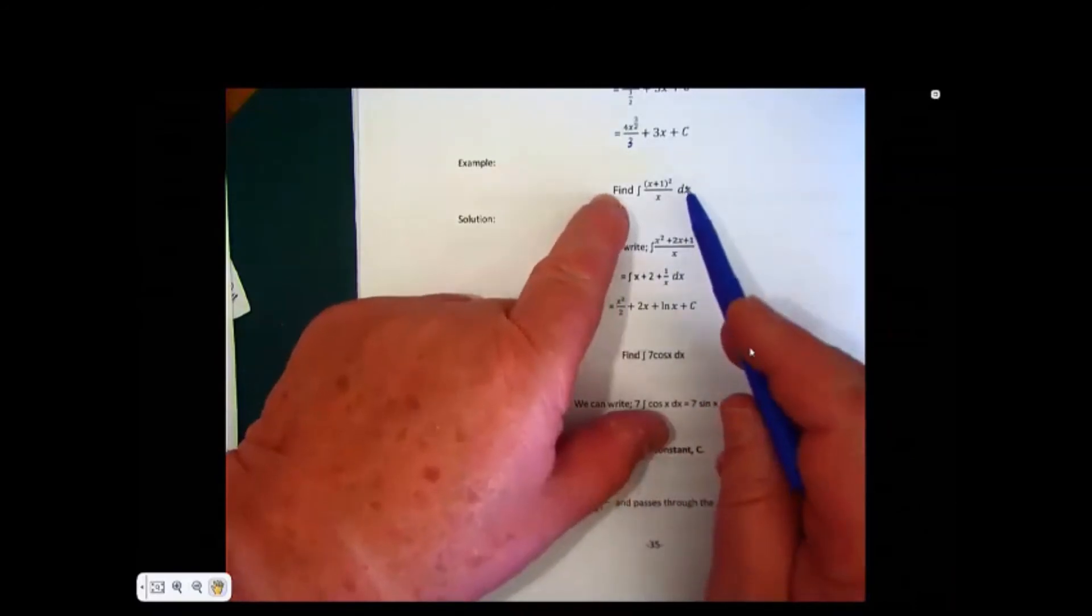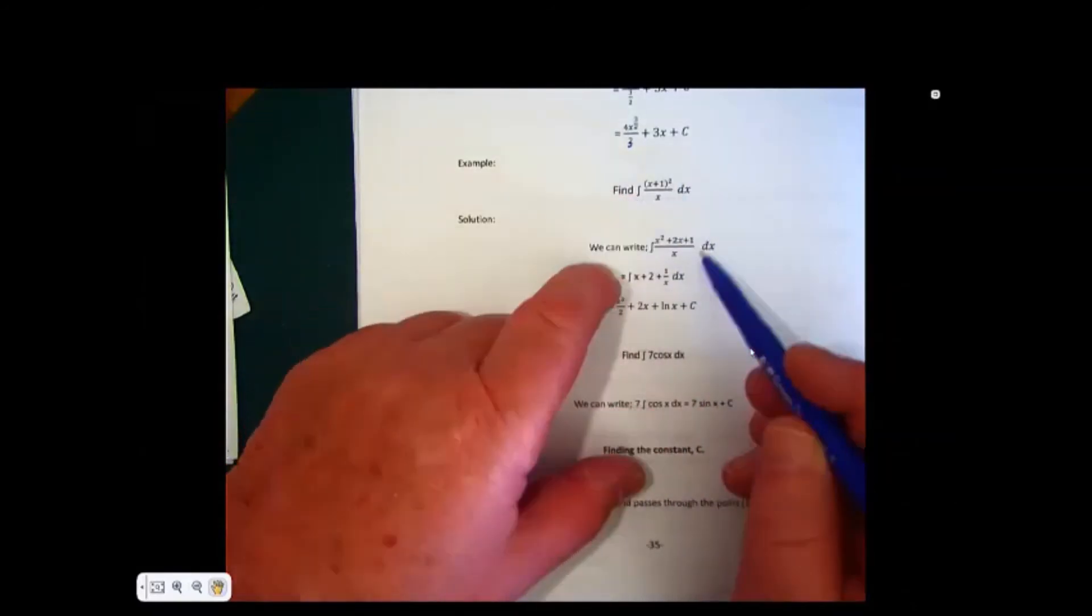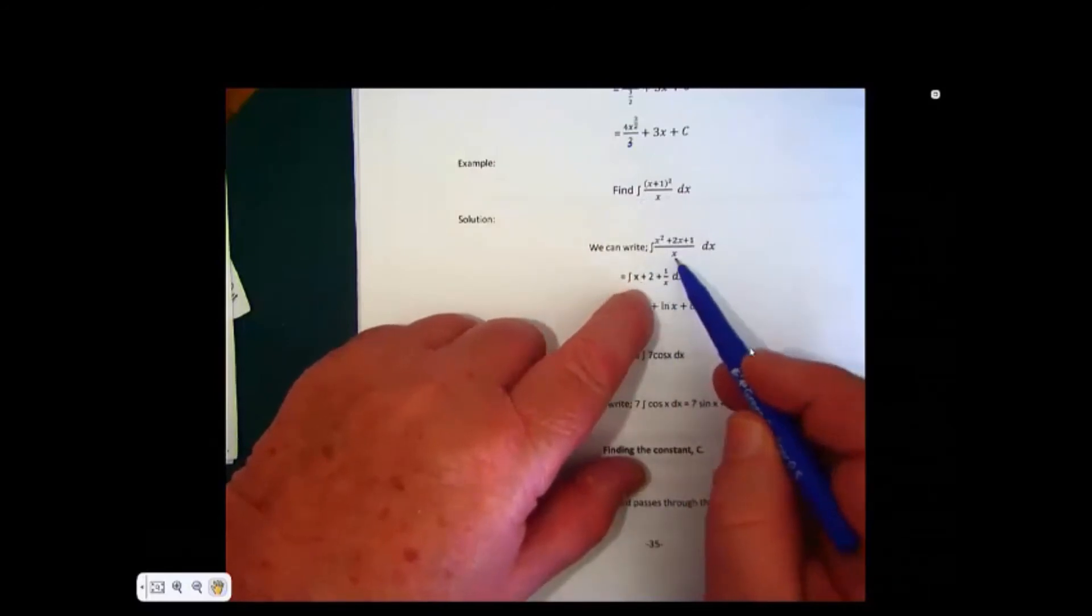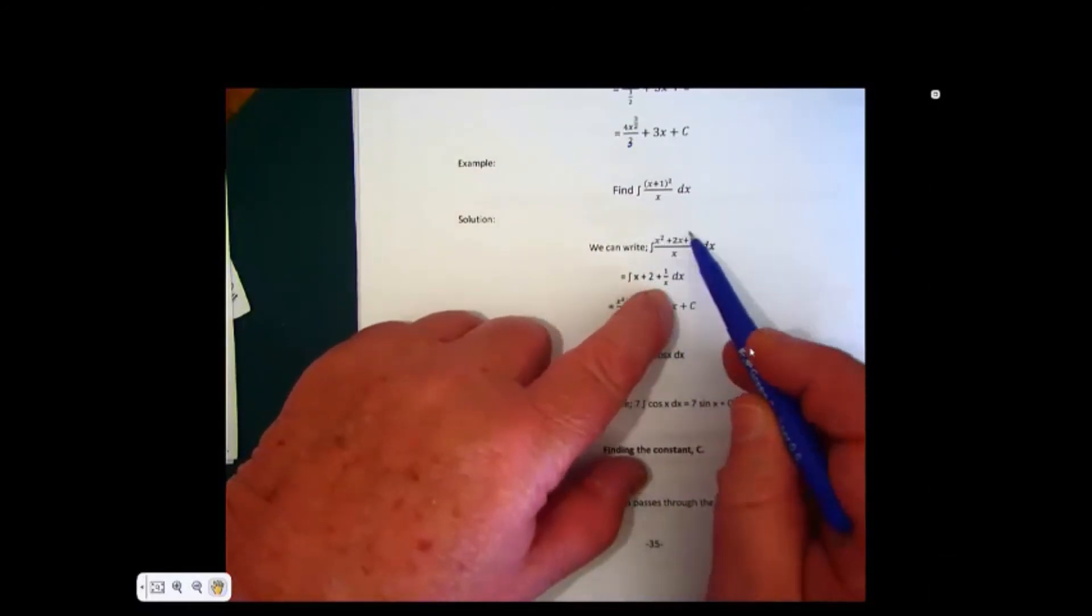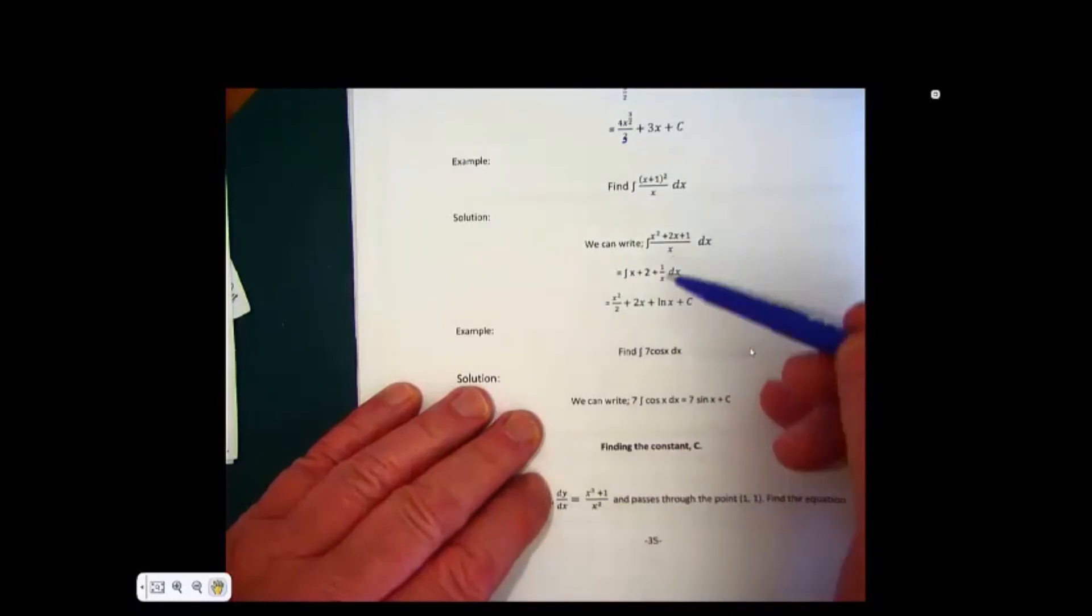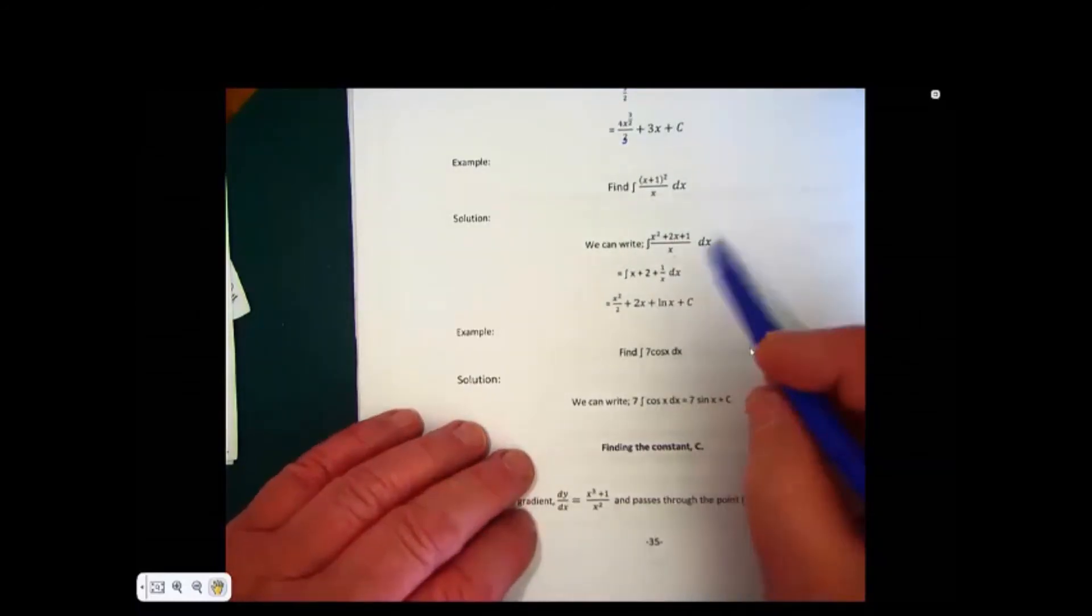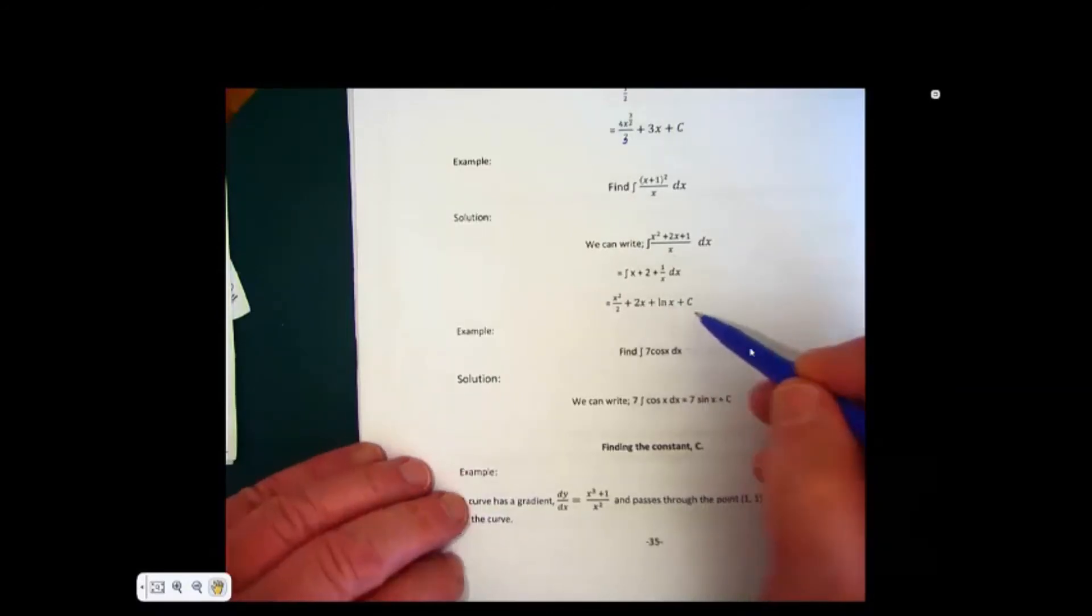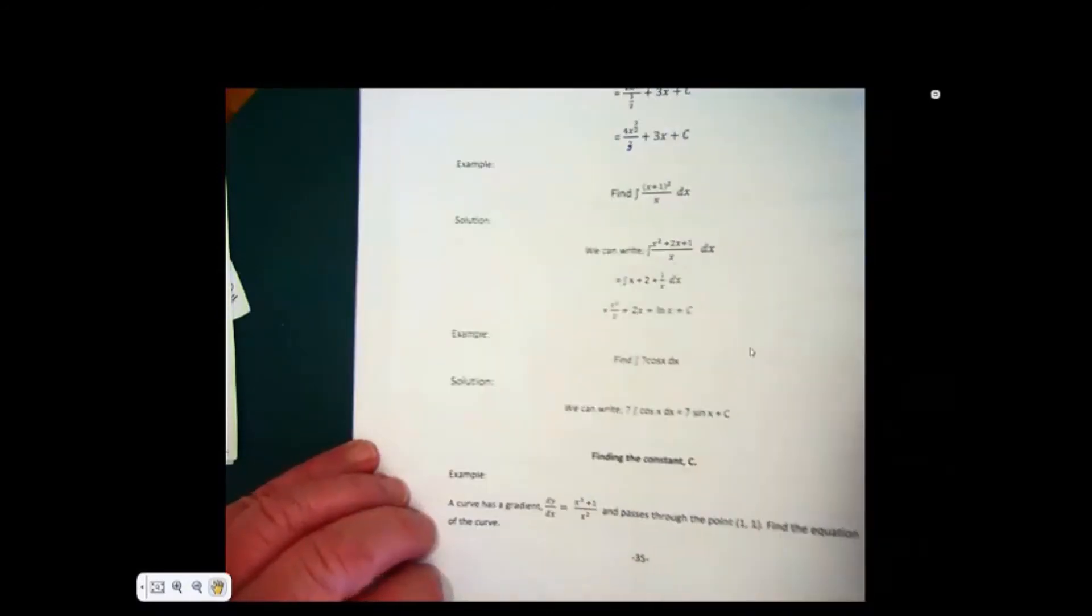Sometimes, before you integrate the term, you have to simplify it. So x squared over x is x, 2x over x is 2, and this is 1 over x. So this term here can be simplified to this. Then you integrate that. Now, this is a special form, because 1 over x, when you integrate 1 over x, it integrates into a known form, and this is one you'll have to learn, which is log x, natural log x.